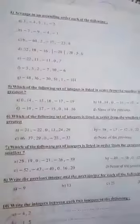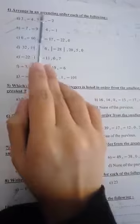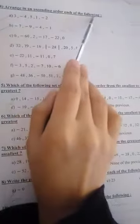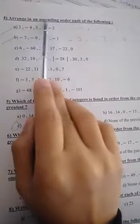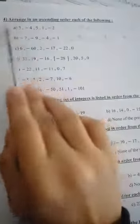Here, in page 12, arrange in an ascending order each of the following. I have 3, negative 4, 5, 1, and negative 2. What ascending means? From small to big, right? What is the smallest number here?